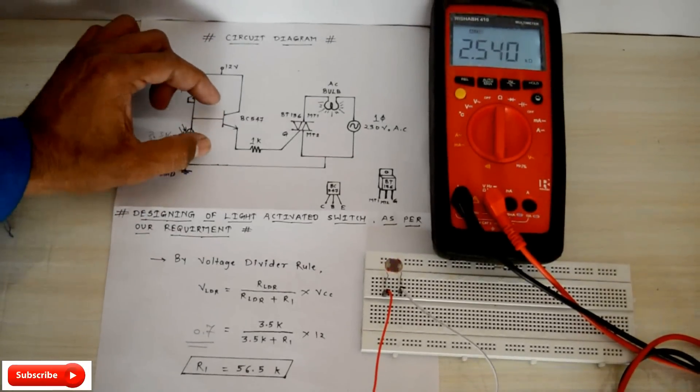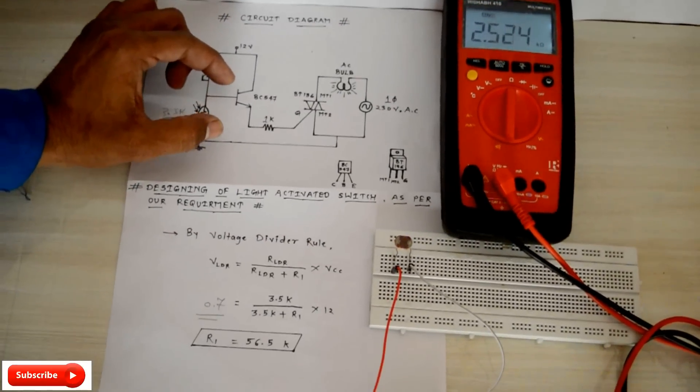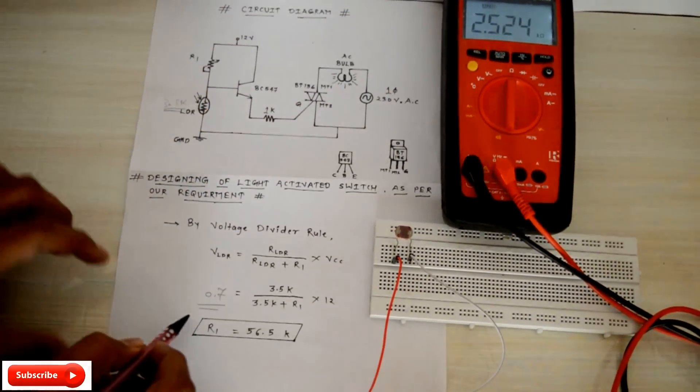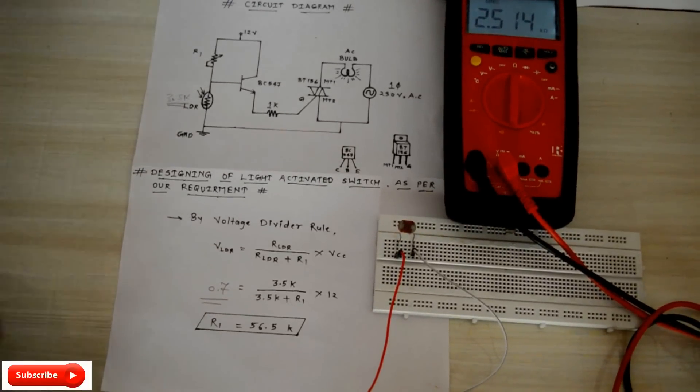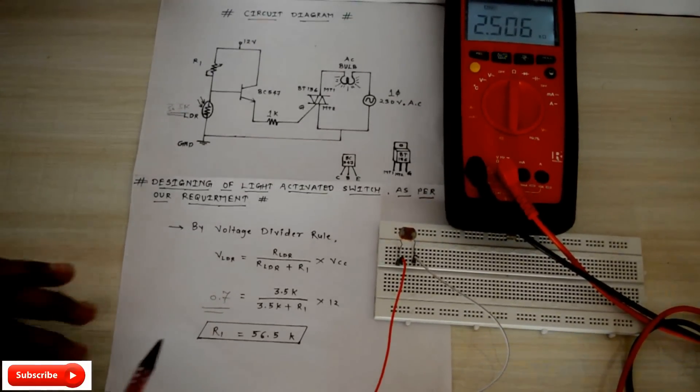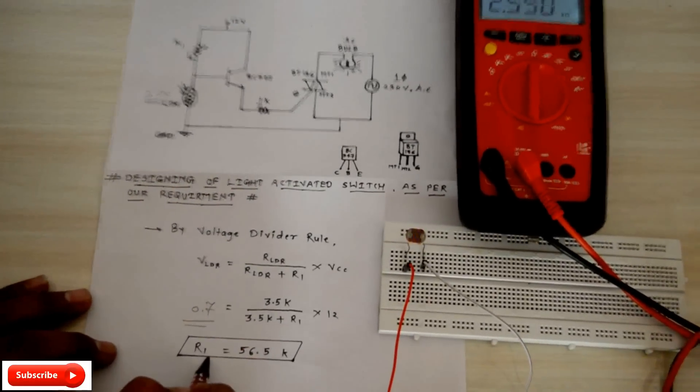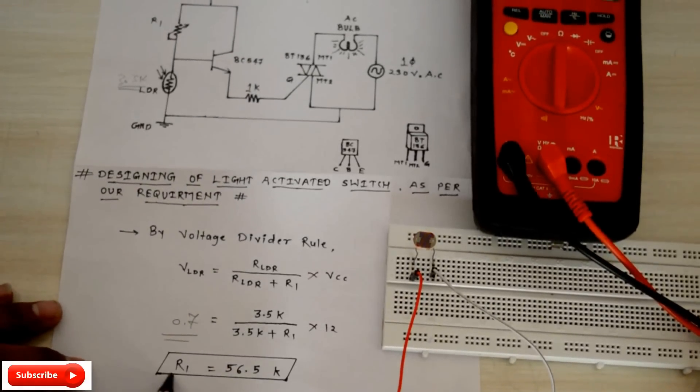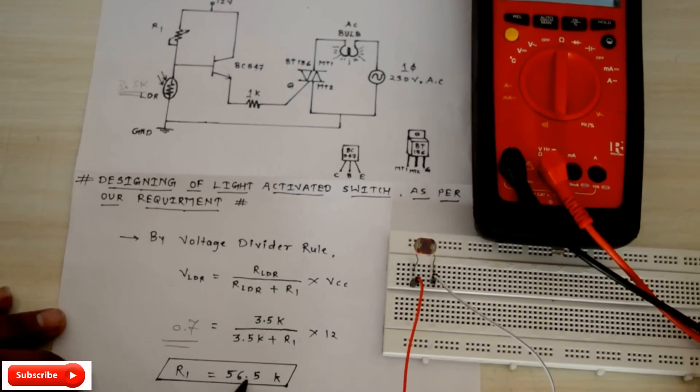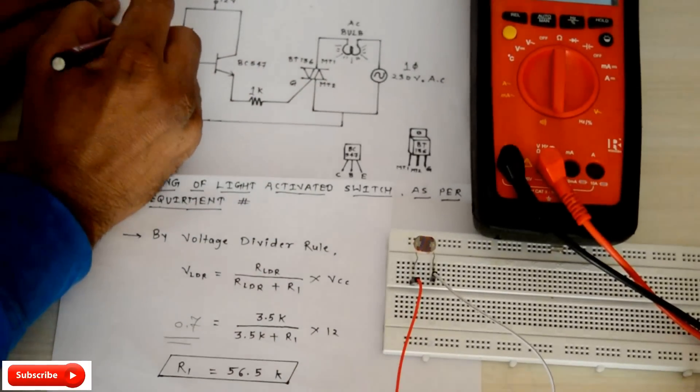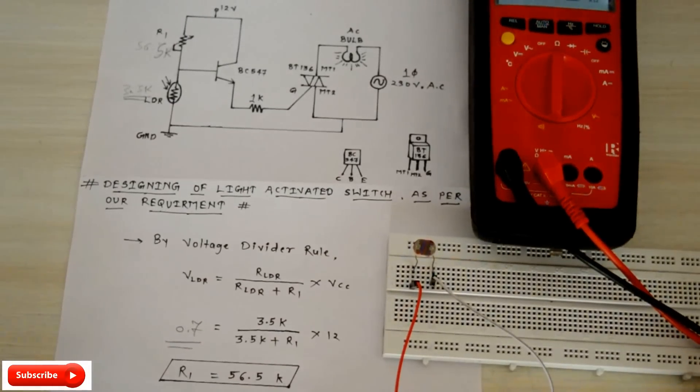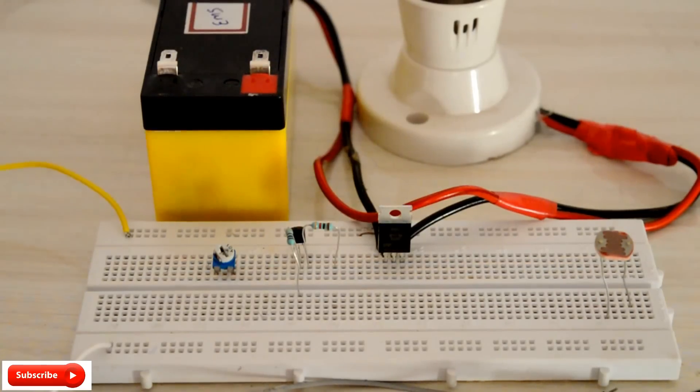Then from this formula we can calculate R1 is equal to 56.5K. Put it in front of R1. Let's do it guys.